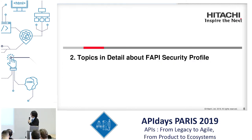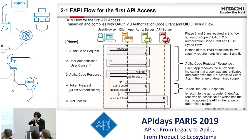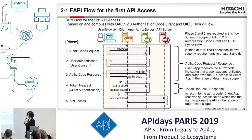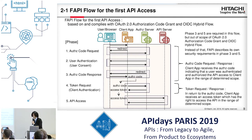Next, I will pick up the FAPI security profile and describe it in detail. This is the flow of the first API access. It is basically the same as the OAuth 2 authorization code flow and consists of five phases.